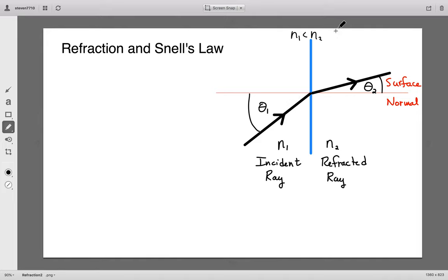So I can even say if N1 is less than N2, then I know theta2 will be smaller than theta1. This is what we expect when we go from a low index of refraction material into a higher index. We refract toward the normal.